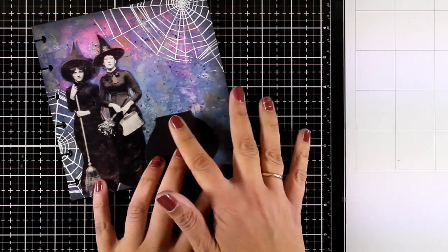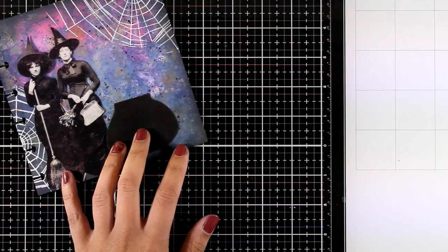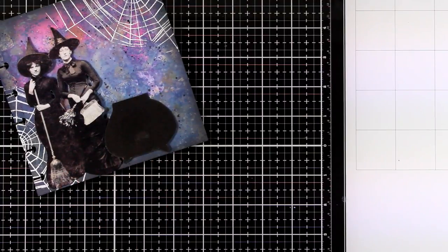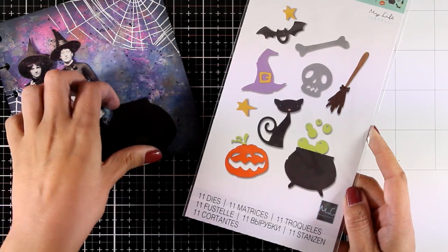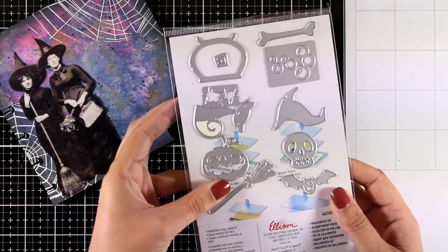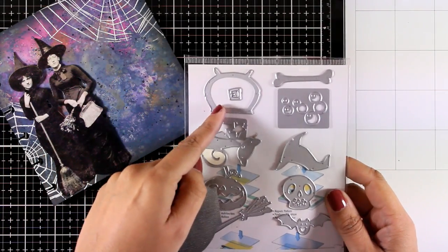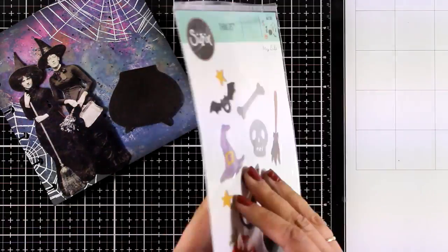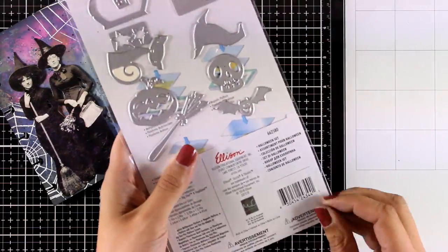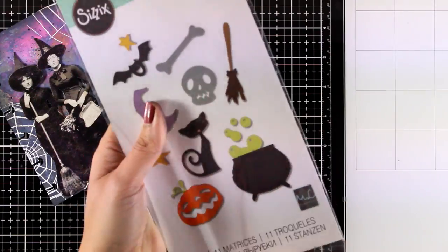Now I'm going to show you how I got the idea to draw the cauldron. So I have a Sizzix die which is called Halloween set. I'm going to grab it here for you so you can see. But for the proportions of my page it was quite small. So I decided to draw my own. But I will use the bubbles from this set to cut them out and use them on my page.